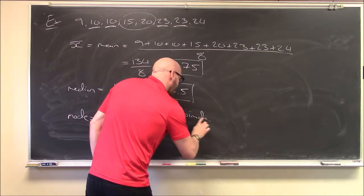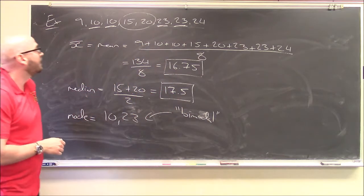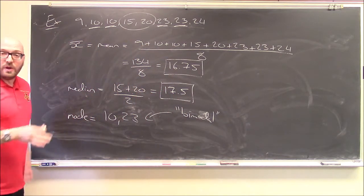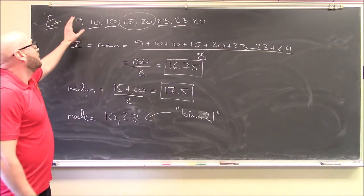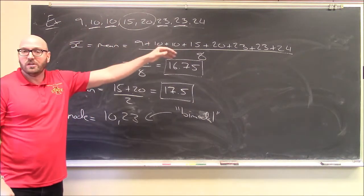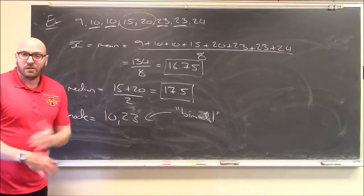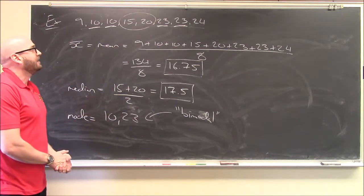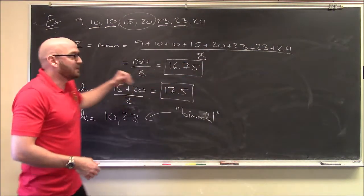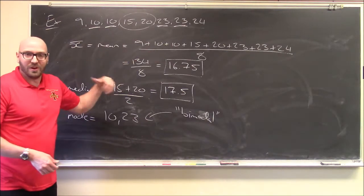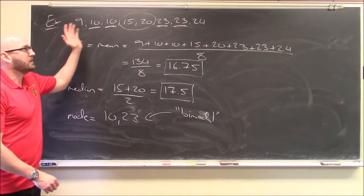What's the mode — the most frequently occurring number in this list? Well, 10 appears twice and 23 also appears twice. Which one is more frequently occurring? Neither — they're both the most frequent. So you list both: 10 and 23 are both the mode for this sample. Because of this, sometimes you'd say this sample is bimodal — it has two different modes. Also, if every number occurs only once, there is no mode.